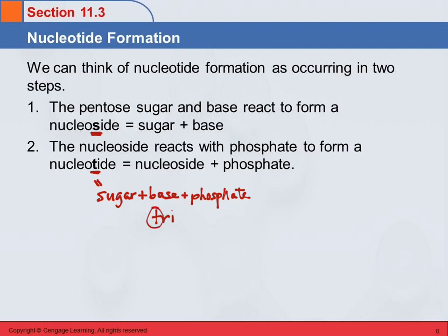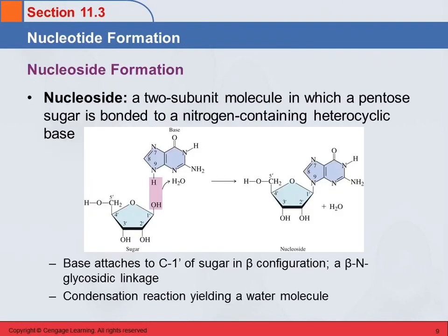Nucleoside formation first — that's the two-subunit molecule. We have the pentose sugar bonded to a nitrogen-containing heterocyclic base. Here's our base, and here's our sugar, and it's going to react here. This is a condensation reaction — a condensation reaction is where two large molecules come together to form one molecule, and a small molecule is given off. Here, one water molecule is given off.